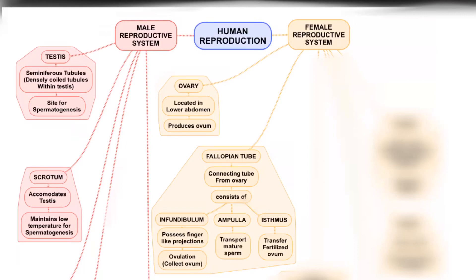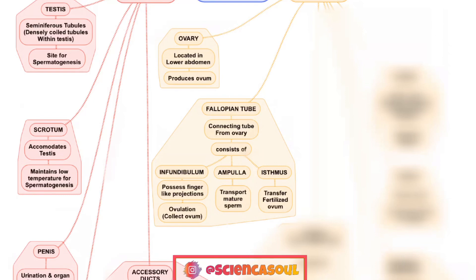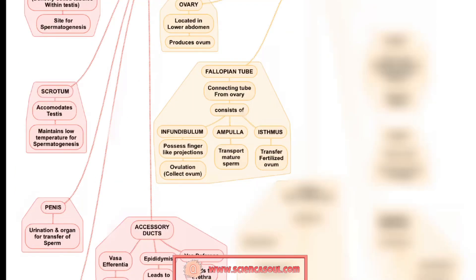Next is the fallopian tube, which is the connecting tube from the ovary to the uterus and consists of 3 parts: infundibulum, ampulla, and isthmus. The infundibulum possesses finger-like projections also called fimbriae, and collects the ovum after ovulation. The ampulla transports the mature ovum from the infundibulum to the isthmus. The third part transfers the fertilized ovum, and the fertilization site is the ampulla-isthmus junction.